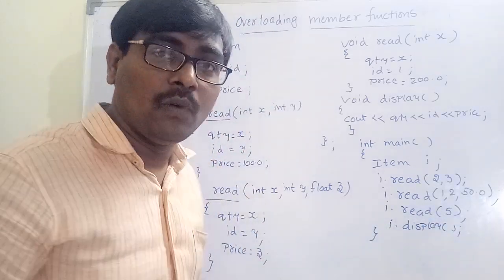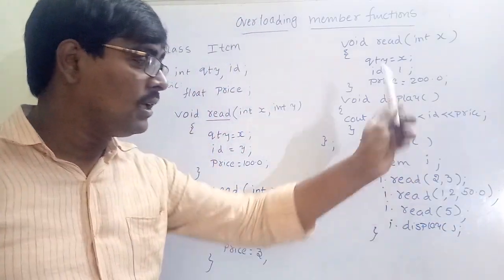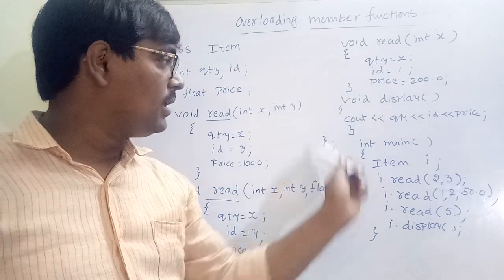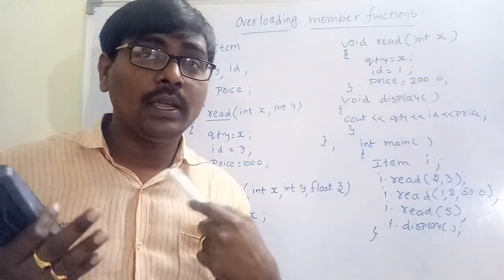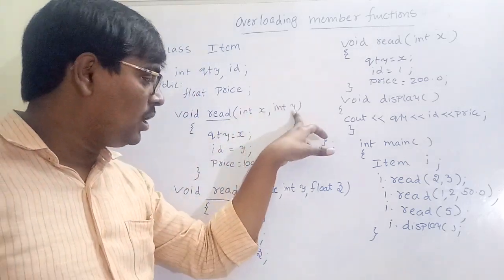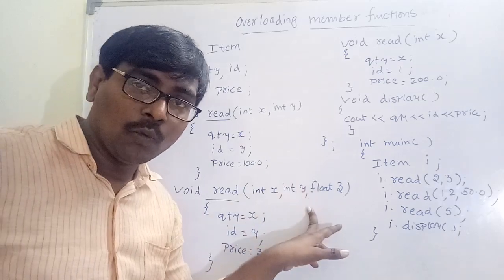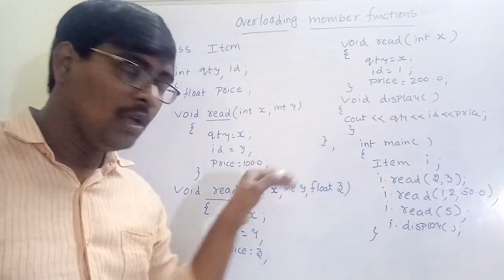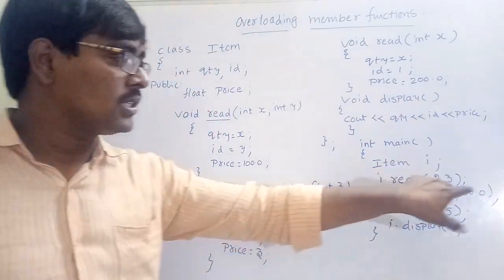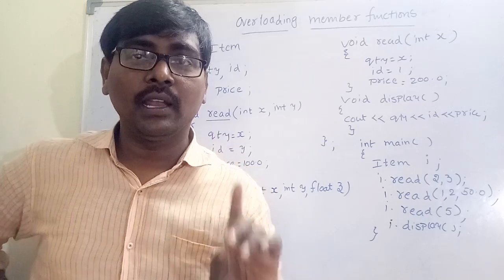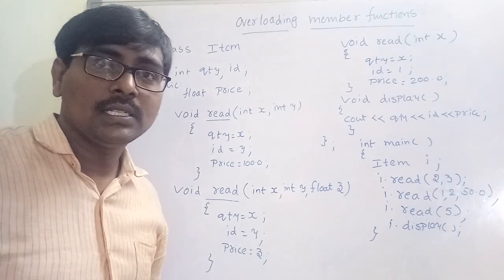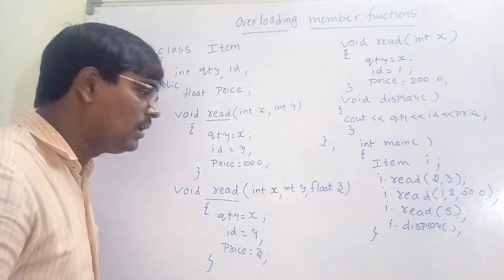So that is how we call an overloaded function — based on the number of parameters. We can also differ in the data type: for example, `float x, float y` — if you pass floating values, that function is called. The return type does not matter; overloading depends on the number and/or data type of parameters.